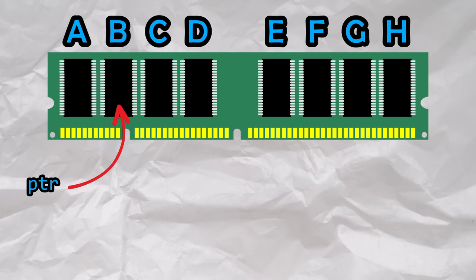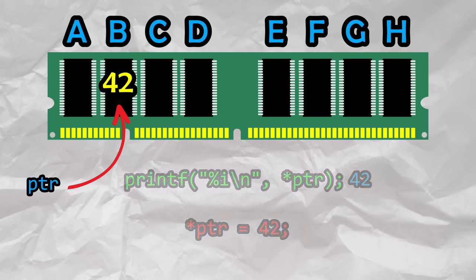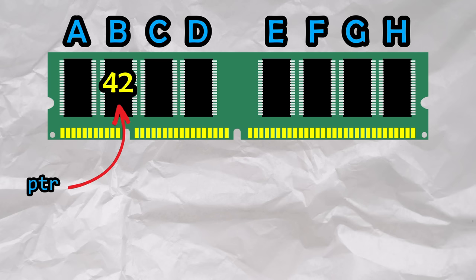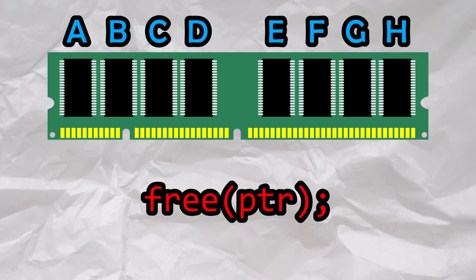We can do various things with the pointer, such as storing an integer in the allocated memory, and we can access what is in the memory by dereferencing the pointer with an asterisk. Whenever you're done with the allocated memory, you should deallocate it with free, which releases the memory and makes it available for future use. Forgetting to free allocated memory could lead to a memory leak.